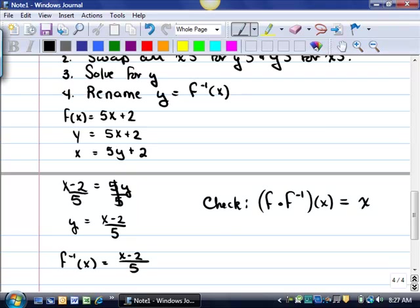So, I'm going to take f inverse of x, circle it. And that's the one that's going into the f(x) function. All the way back up here. Plug it in. So, this is 5 times (x minus 2 over 5) plus 2. All right.